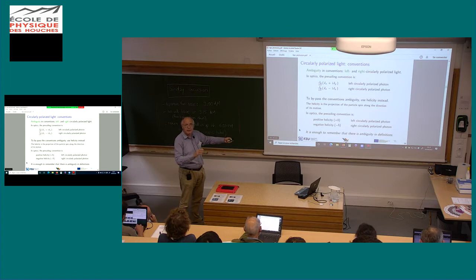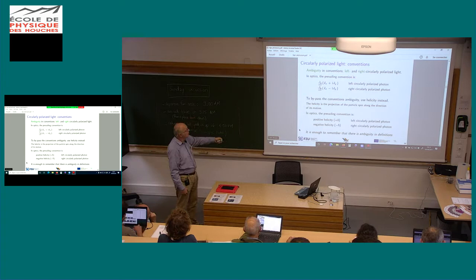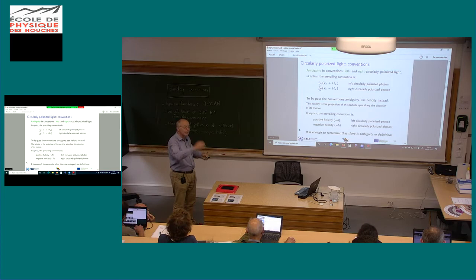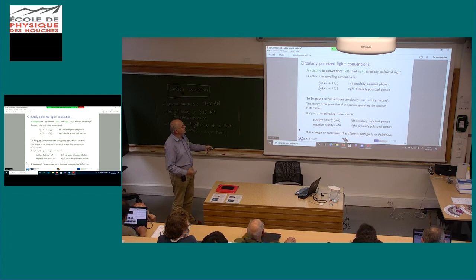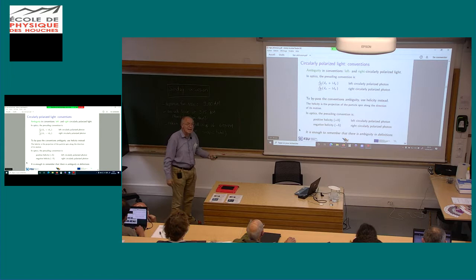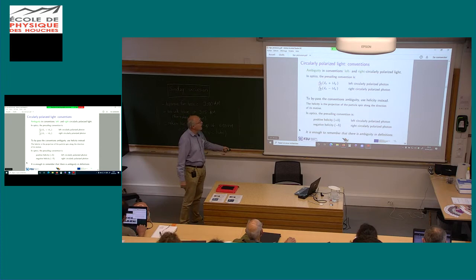Usually in optics, if the polarization vector rotates in one way, it's called left circularly polarized, and the other way is right circularly polarized. But in particle physics there are different conventions. If you want to bypass this ambiguity, focus on helicity — the projection of the particle spin. In optics and X-rays, positive helicity usually means the photon is left circularly polarized. It's enough to remember that there is ambiguity in the convention, so just don't get intimidated if the signs are different.